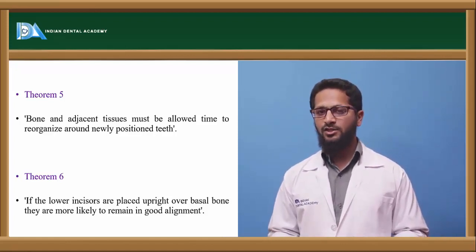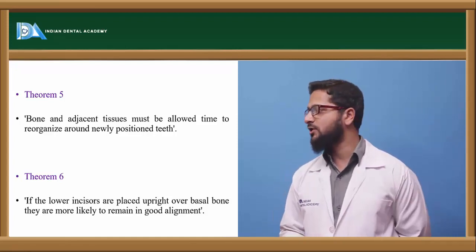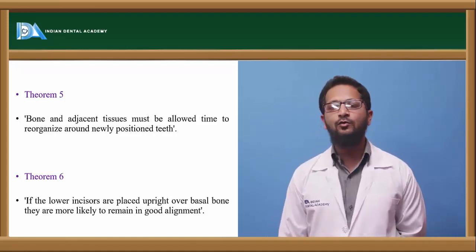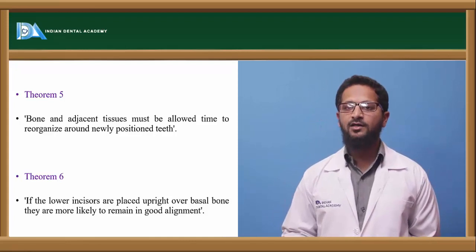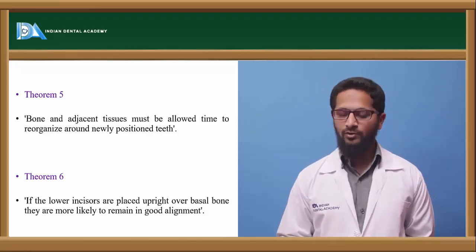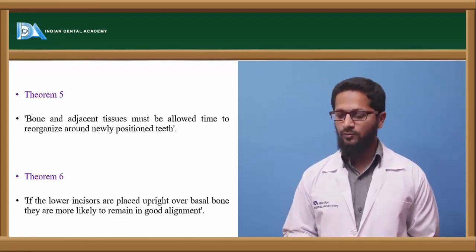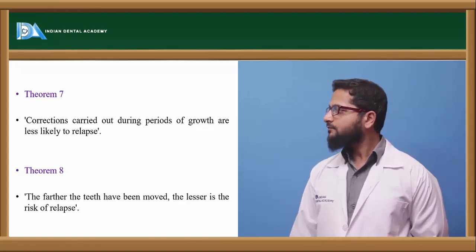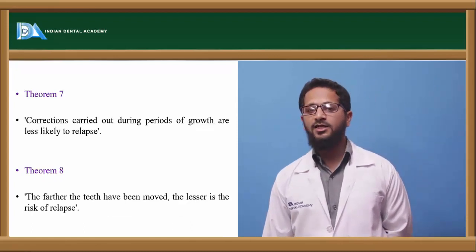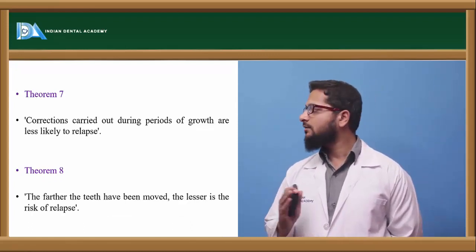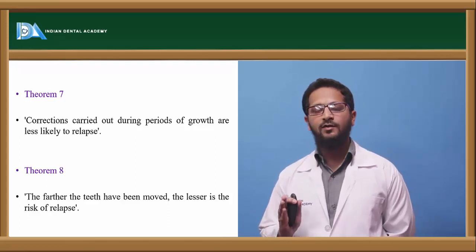The sixth theorem states that if the lower incisors are placed upright but slightly retroclined over the basal bone, there are more chances for stability. The seventh theorem states that corrections carried out during periods of growth will be more stable and there will be less chance of relapse.